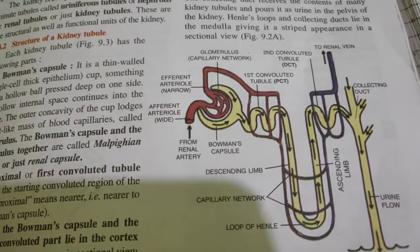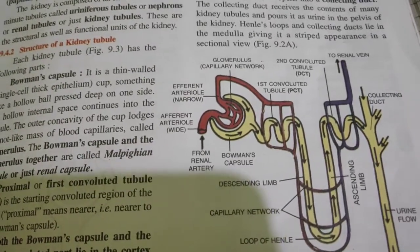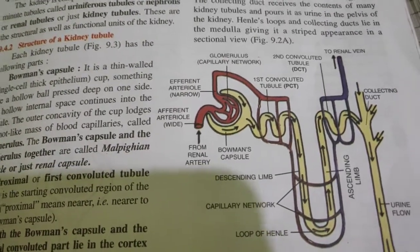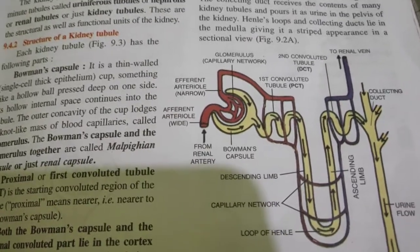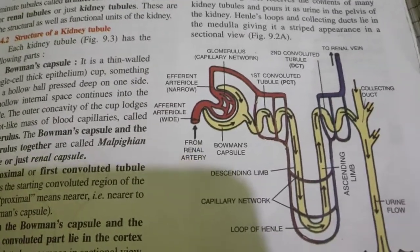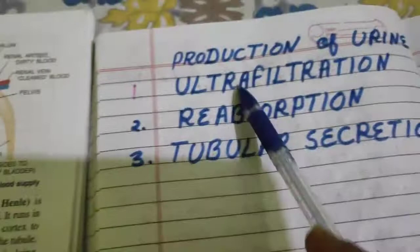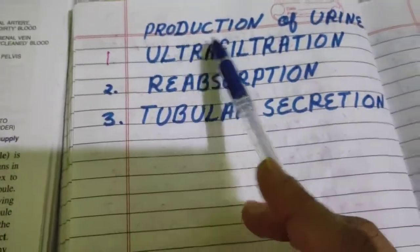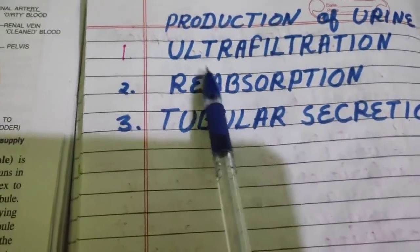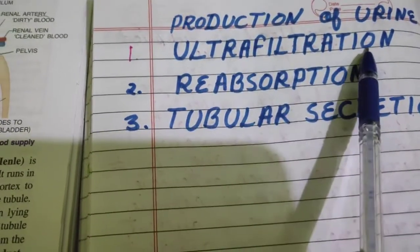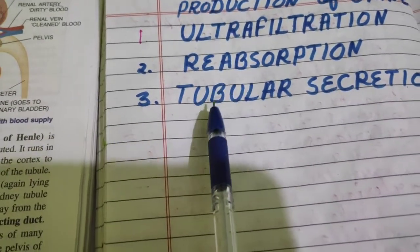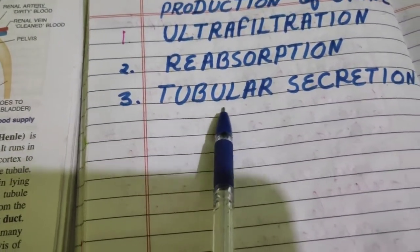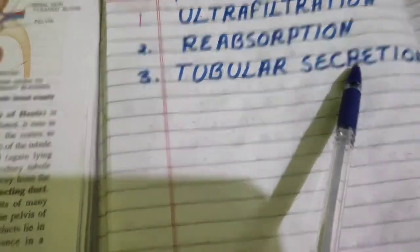Hello dear students. In this video we will study how urine is produced by the kidney. There are three steps of production of urine: first, ultrafiltration; second, reabsorption; and third, tubular secretion.